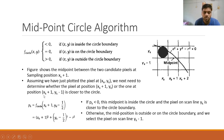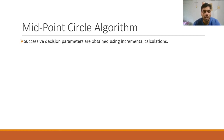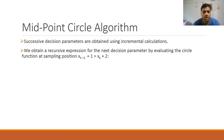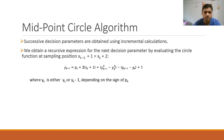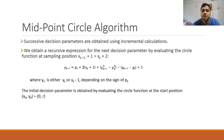Evaluating the circle function at (xk+1, yk-½) — that is (xk+1)² + (yk-½)² - r² — and simplifying gives us successive decision parameter values. The recursive expression for the next decision parameter is: pk+1 = pk + 2(xk+1) + 1 + (yk+1)² - (yk)² - 2(yk+1), where yk+1 is either yk or yk-1 depending on the sign of pk. The initial decision parameter is obtained by evaluating the circle function at the start position (0, r).